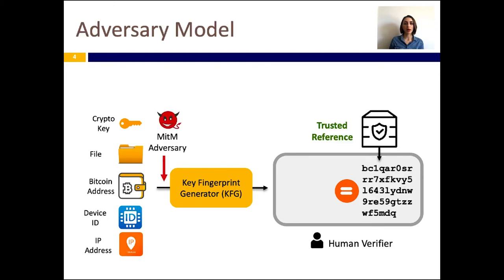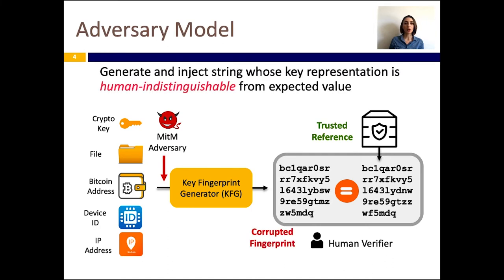We also consider a man-in-the-middle adversary who can inject his own input key and try to impersonate a remote server or device, or a scenario where the adversary can send a corrupt bitcoin address or file to a user. Generally, the adversary attempts to generate a special key whose key fingerprint representation looks similar enough to the trusted reference value in order to fool the human verifier. For example, here you can see the text-based key fingerprint representation of the attacker's key differs from the trusted value only in a few positions.